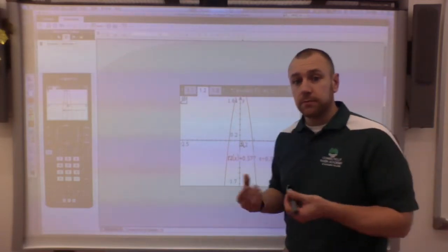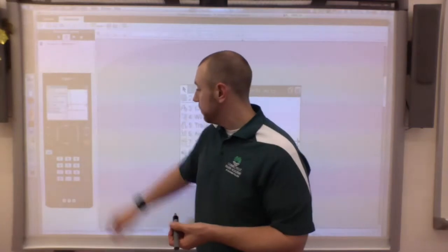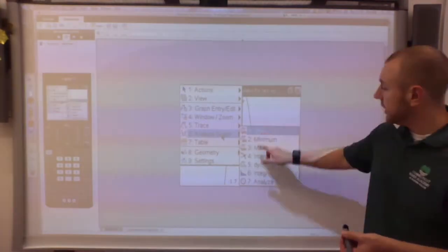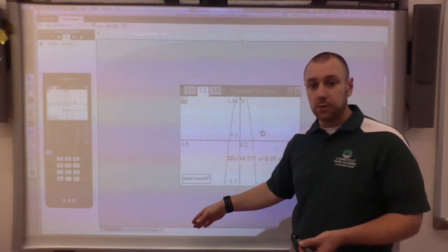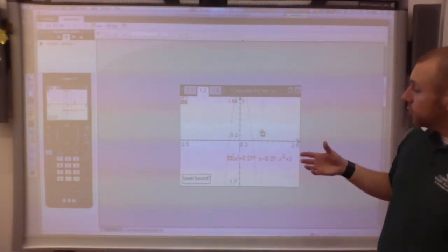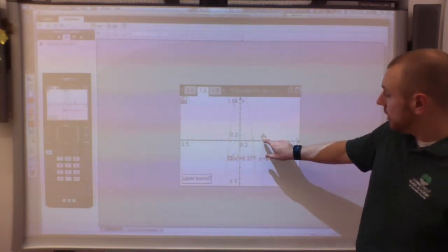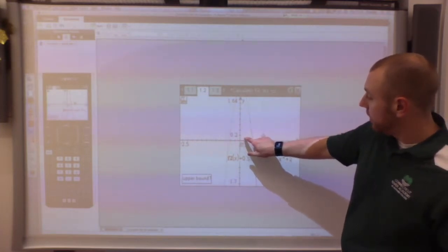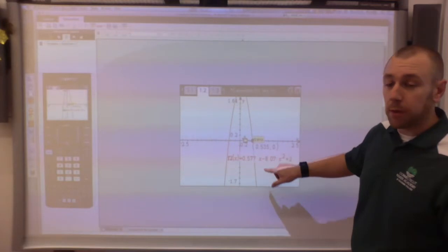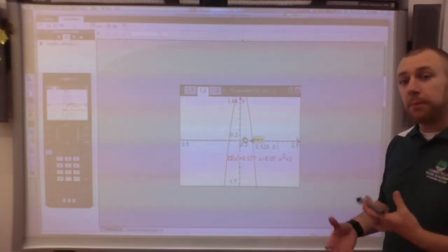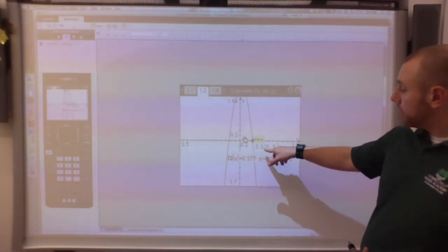To find the zero in the graphing calculator I go to menu, I go to analyze graph, and I hit zero. This little thing called lower bound will pick up and you'll have this hand. Really all you need to do is click and then drag this over until magically you see this zero thing pop up and it'll give you a point. That point is your answer.